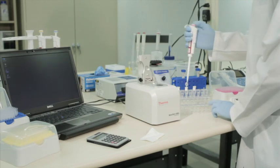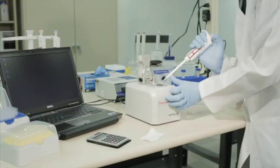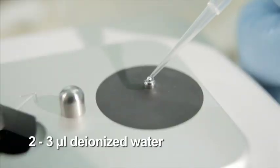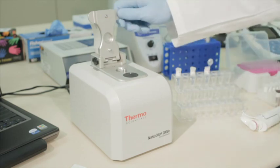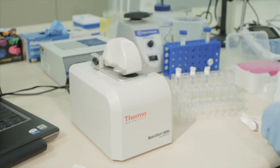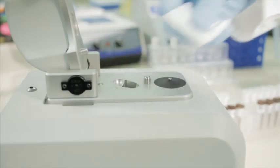To begin, clean the upper and lower optical surfaces of the microvolume spectrophotometer sample retention system by pipetting 2 to 3 microliters of clean deionized water onto the lower optical surface. Close the lever arm, ensuring that the upper pedestal comes in contact with the deionized water. Lift the lever arm and wipe off both optical surfaces with a clean, dry, lint-free lab wipe.